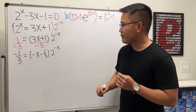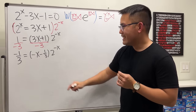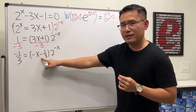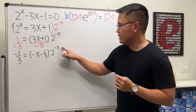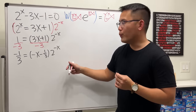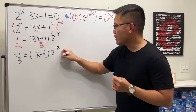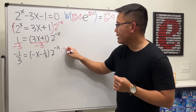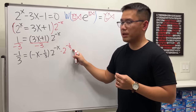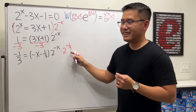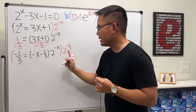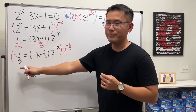We need the −1/3 to also appear in the exponent. That means we multiply by 2^(−1/3) so we can combine the exponents. Of course, we also have to multiply the left side by 2^(−1/3) as well.